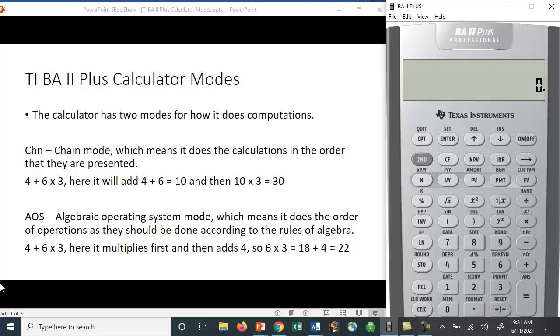It also has this AOS mode, which stands for Algebraic Operating System mode. It means it does the order of operations as they should be done according to the rules of algebra. So 4 + 6 × 3: here it multiplies first and then adds. So 6 × 3 = 18, plus 4 = 22.